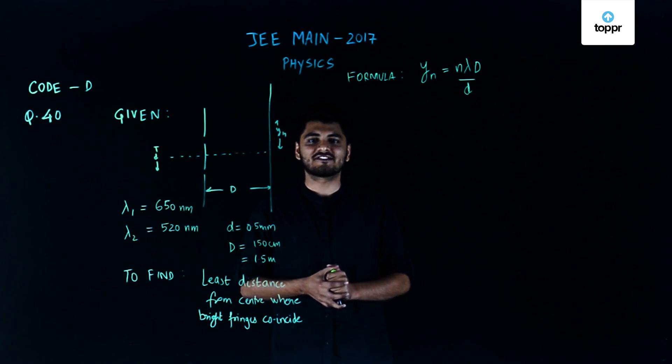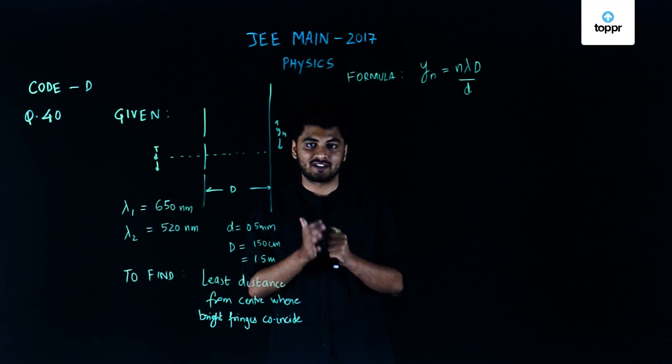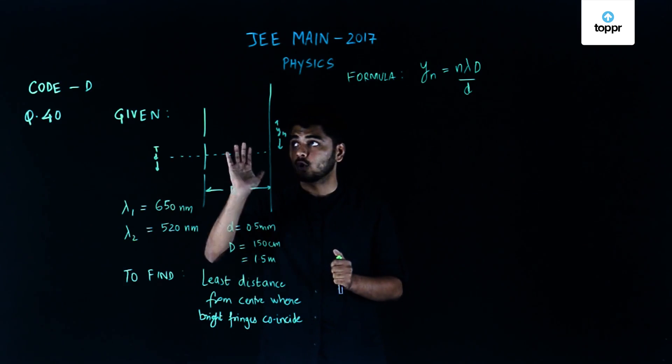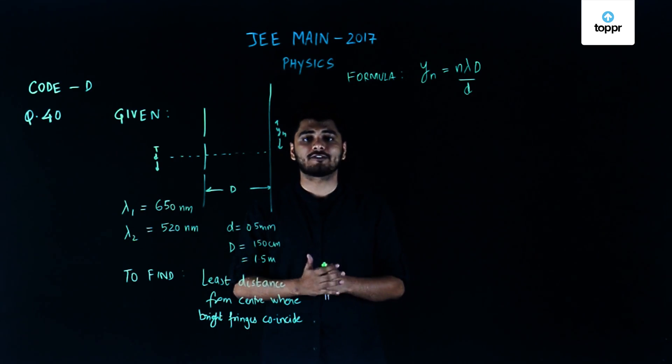Hello students, we have been solving the physics section of the JEE Main paper of 2017 using code D for all the solutions. This is question number 40 from code D.